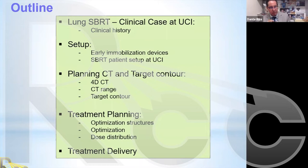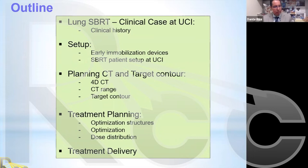Here is the outline of my presentation. I will begin with the lung SBRT clinical case we saw at UCI, covering the clinical history, setup devices used in our clinic, target contouring, contours for treatment planning, the treatment planning itself, and finally the treatment delivery.